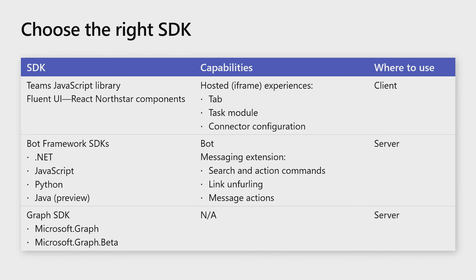Another reason to use the toolkits for generating scaffolding for your app is that they pull in the right base set of libraries and SDKs for you. For instance, when you create a tab app with the Visual Studio Code Toolkit, you'll find that it includes the Teams JavaScript library, which is a prerequisite for all iframe content inside Teams, like tabs, task modules, and connector configurations. It also includes the Fluent UI React components, which are a set of components for React that are styled like the ones used inside Teams itself. These two libraries are what you'll use when developing hosted experiences inside Teams.